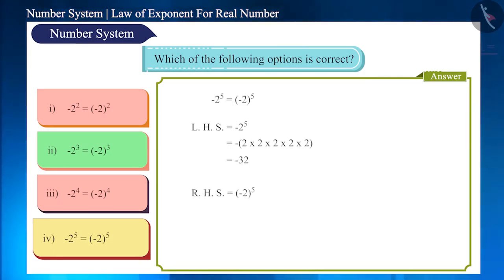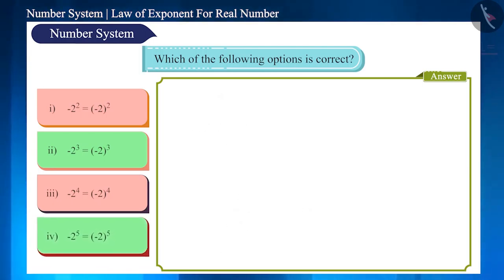Look at the fourth and last option. It has -2 raised to power 5 on the left side and its value is -32. The right side has the -2 in brackets raised to the power 5 and its value is also -32. That is, the left hand side is equal to the right hand side, so this option is correct.